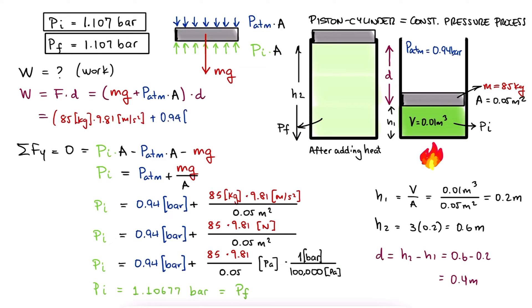This means that the change in height for the location of the piston is 0.6 minus 0.2 or 0.4 meters, and therefore the work is 2213.54 joules.